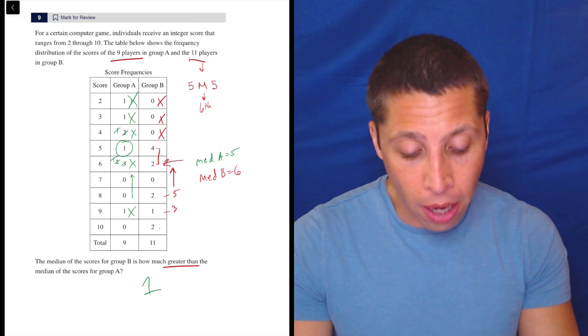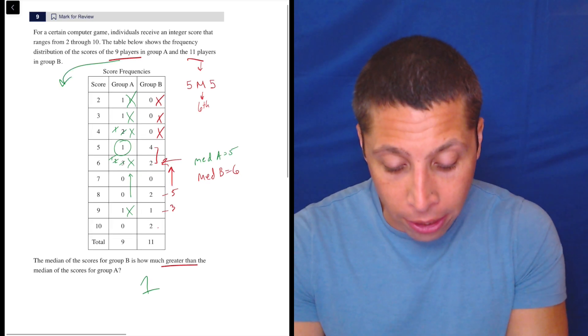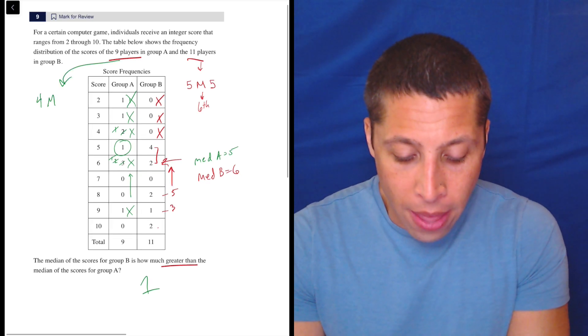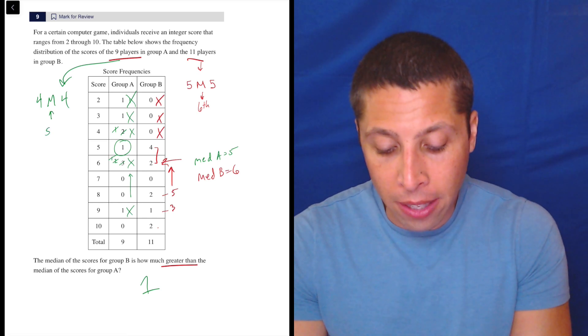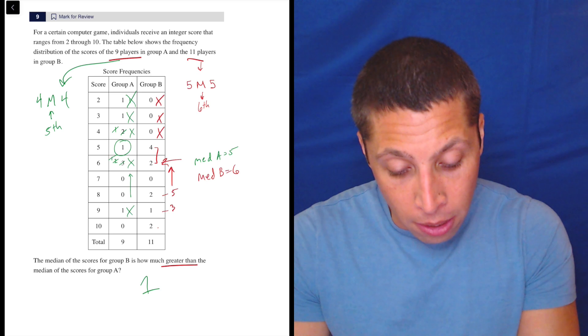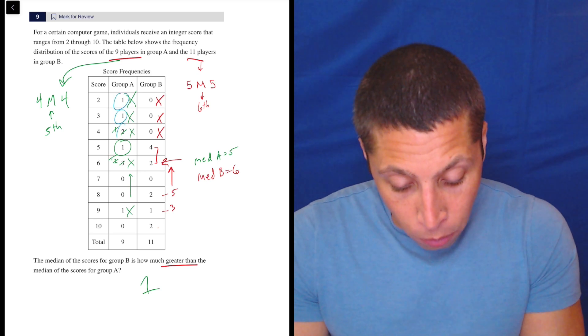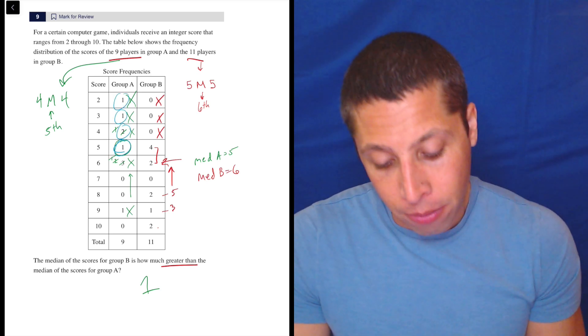If we wanted to do the other method with the 9 players, we would have 4, then the median, then 4. So that's a total of 9. So the median there would be the fifth number, and we use the same thing: 1, 2, 3, 4, 5. Same thing.